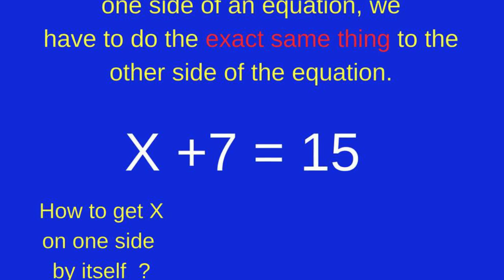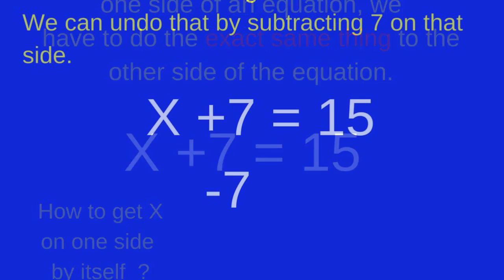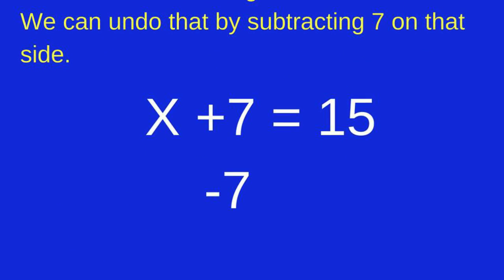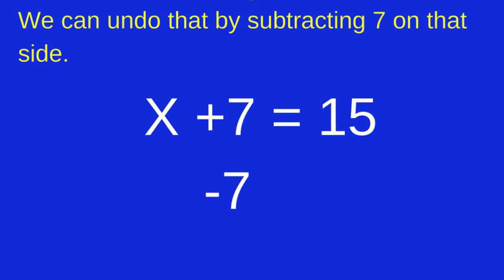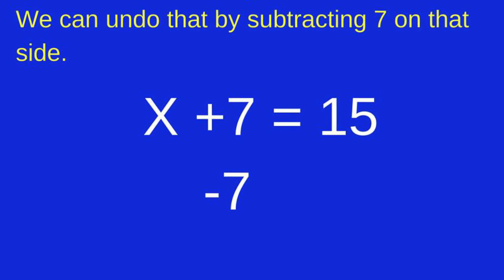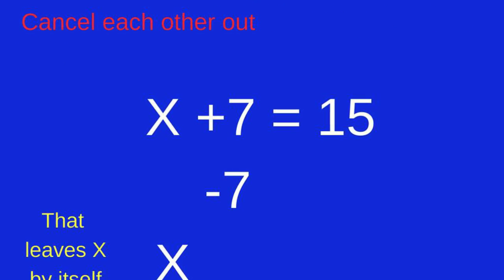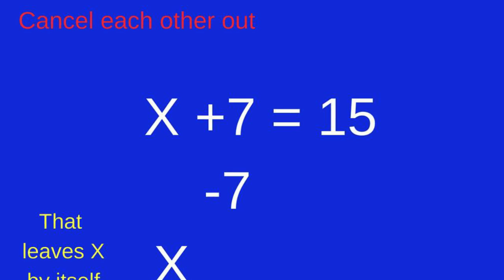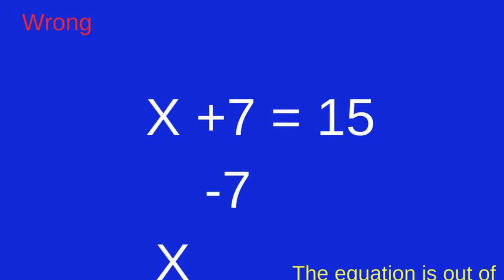How to get the x on one side by itself? You see in x plus 7 equals 15, 7 is being added to x. If we subtract 7 on that side, that leaves x by itself.